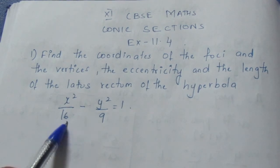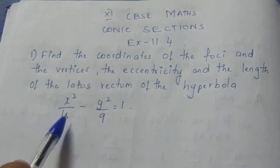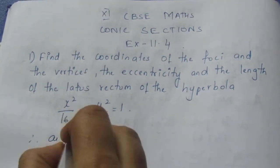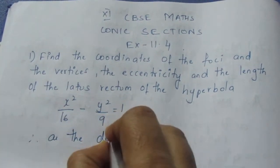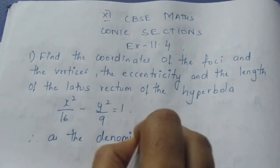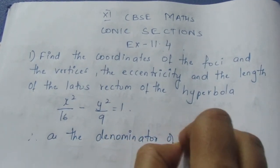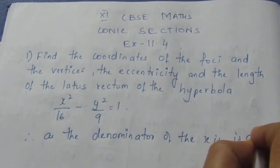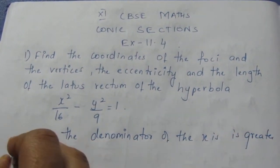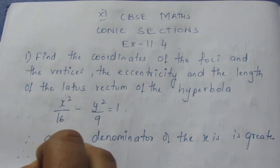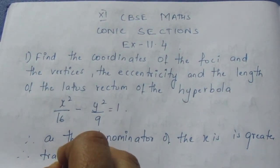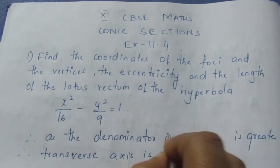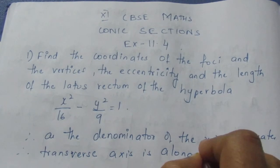Here we need to call it the transverse axis. In a hyperbola, the major axis is called the transverse axis. Since the denominator of x² is greater, the transverse axis is along the x-axis.